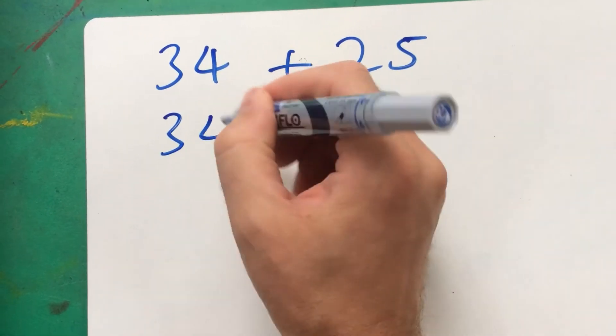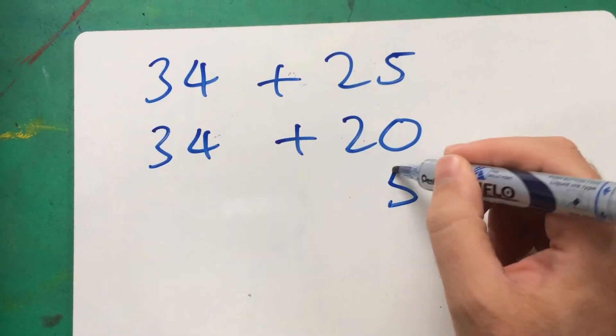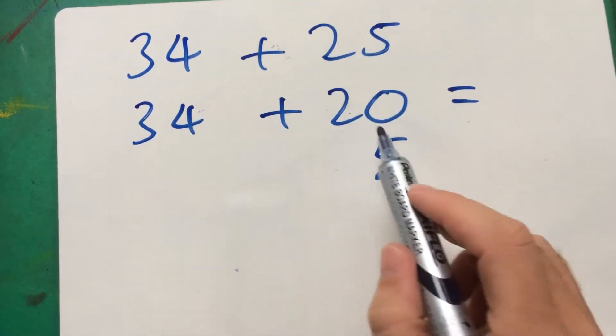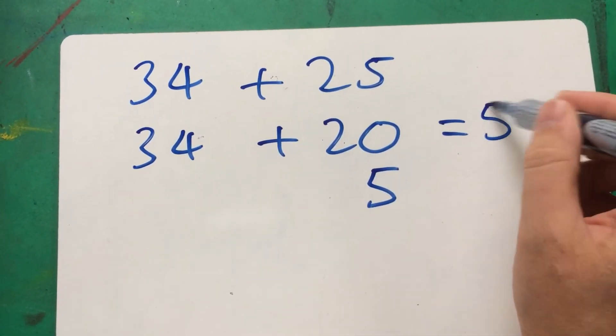Now, I'm going to split only the second one up into its tens and leave its units behind. So what's 34 plus 20? 54.